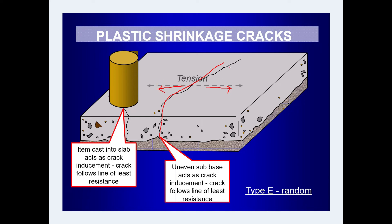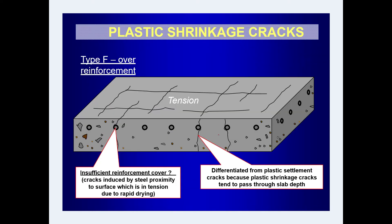This crack occurs because there is a tensile force acting in that direction. Certain constraints and obstructions, such as a column, cause the crack to follow the line of least resistance and propagate accordingly. Crack inducement can also happen due to different slab thickness — where there is a lesser depth, there is a tendency for the crack to appear. Plastic shrinkage cracks many times follow the pattern of reinforcement, with insufficient cover being a major reason. These cracks are throughout the depth.